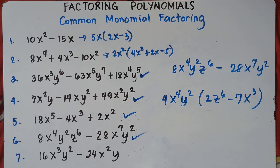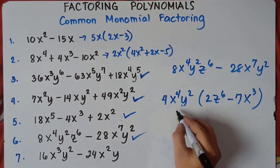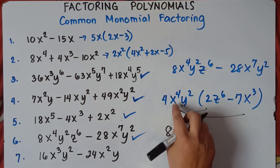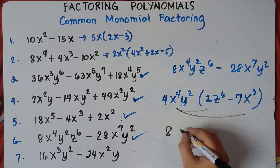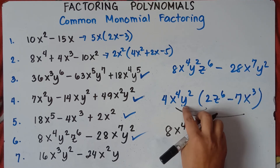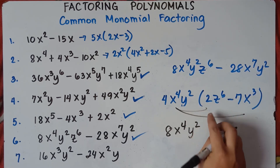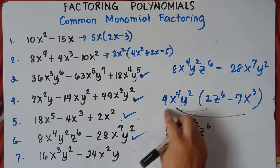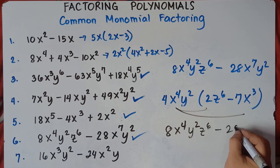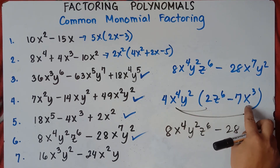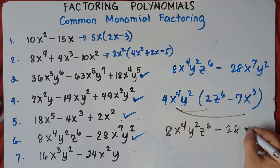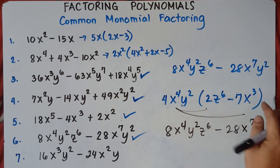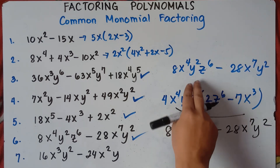You can check the answer by distributive property: 4 times 2 is 8, x⁴ times none — copy x⁴, y² times none — copy y², z⁶ times none — copy z⁶. Then 4 times negative 7 is negative 28. x⁴ times x³ — add exponents — gives x⁷. And y² times none — copy y². You get the same original expression.